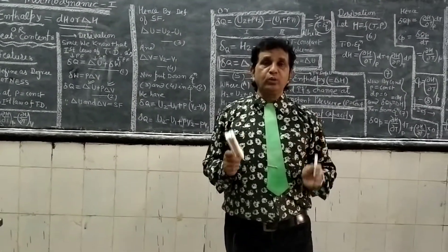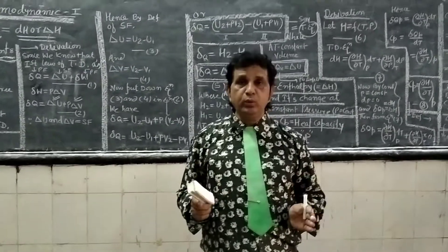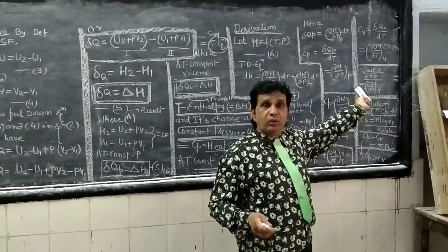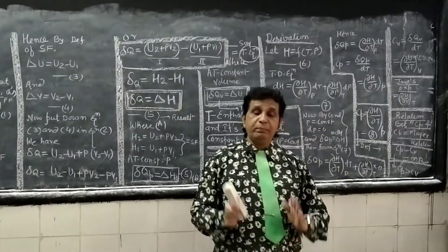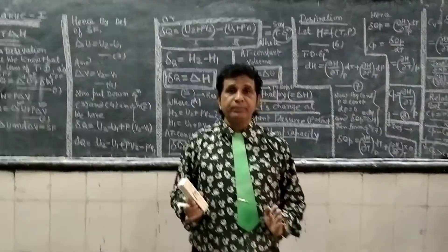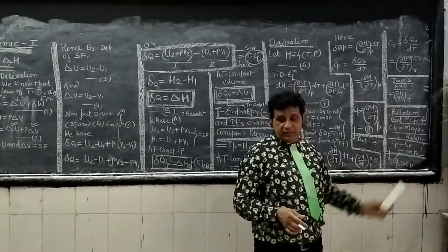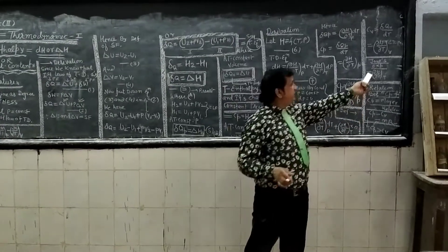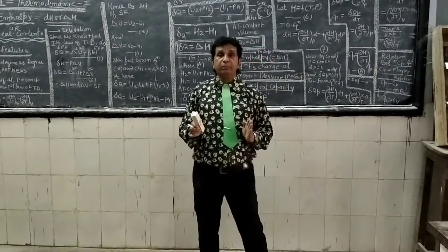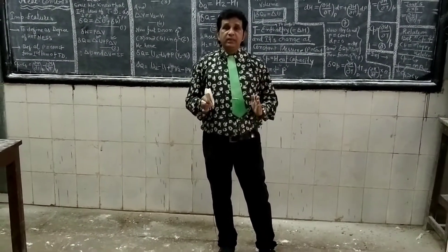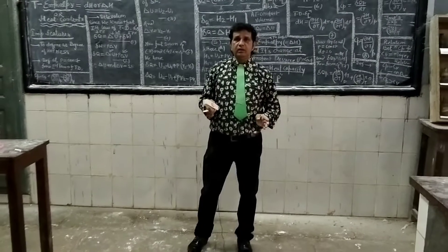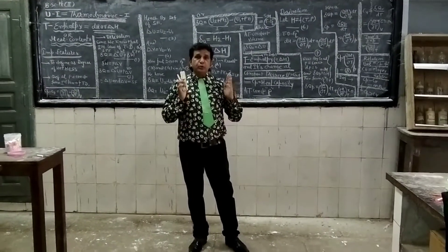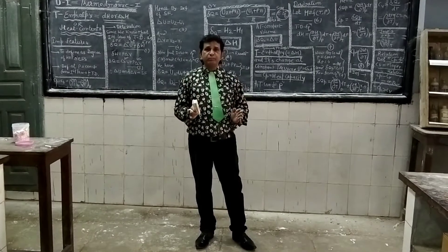The internal pressure, known as Pi, is the value from Joule's experiment. Yesterday we calculated the change in internal energy with respect to volume, keeping temperature constant. We concluded in Joule's experiment that internal energy is independent of volume but dependent upon temperature.